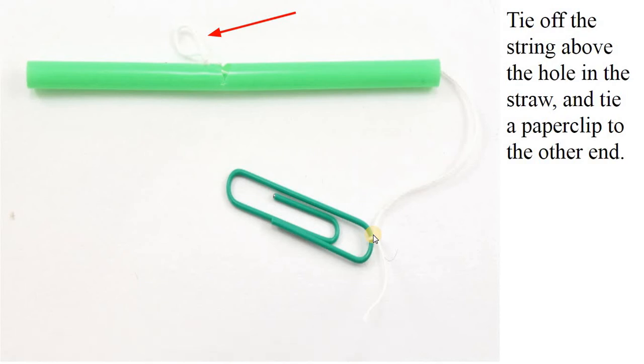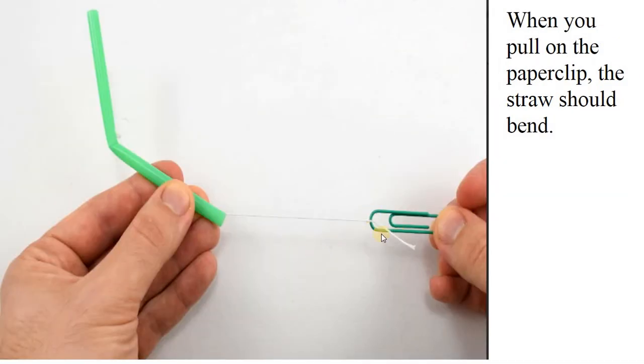You attach the other end to a paperclip. We're doing this simple design. Once you know how to build or make these simple designs, you can modify it and adapt it later. When you pull on the paperclip, that straw, it should bend here. So you're pulling on it here and it'll pull on this here and this will pull it down and it'll bend it like this. Notice this is how the little knot is there so it doesn't go through the hole. That's what that knot is preventing to do. That's a basic finger with the joint design.